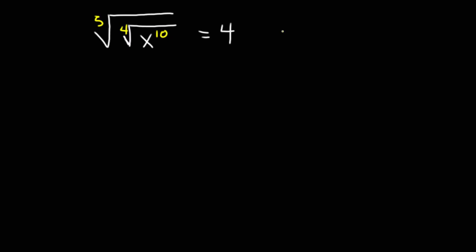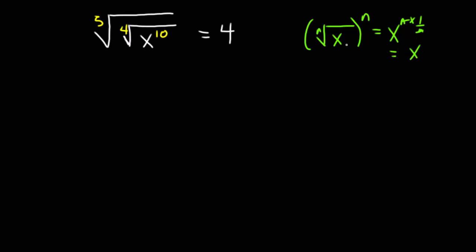Let me start with the first method. Generally, if we have the nth root of x and I want to remove this nth root, I can do that by exponentiating the whole thing to n. This gives us x exponent n times one on n, and this cancels out and we get x. So by doing so we've been able to remove the nth root from x.